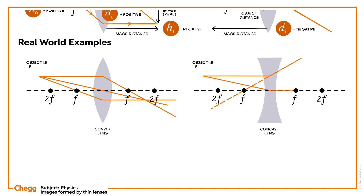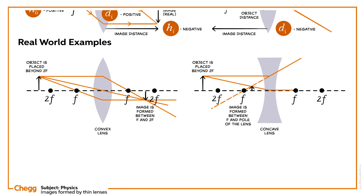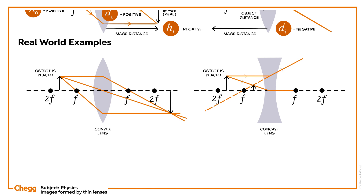If the object is placed beyond 2f, between infinity and 2f, then the images are formed by convex and concave lenses. We can see the images formed in the figure. If the object is placed between f and 2f, then the images are formed by the convex and concave lenses. We can see the images formed in the figure.